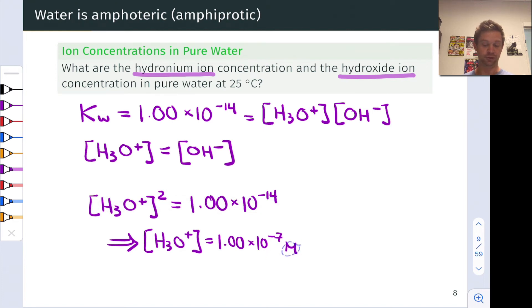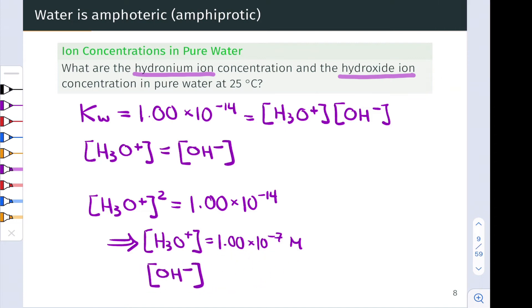And then logically, we already said that the hydroxide concentration must be equal to the hydronium ion concentration, and so we can immediately write that the hydroxide concentration in pure water is also 1 times 10 to the negative 7 moles per liter. You may be familiar with this idea that the pH of pure water at 25 degrees C is 7, and the pOH is also 7.